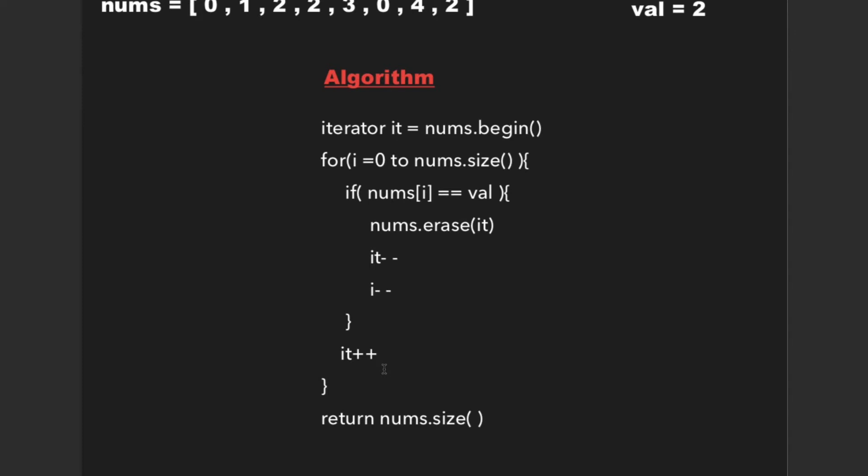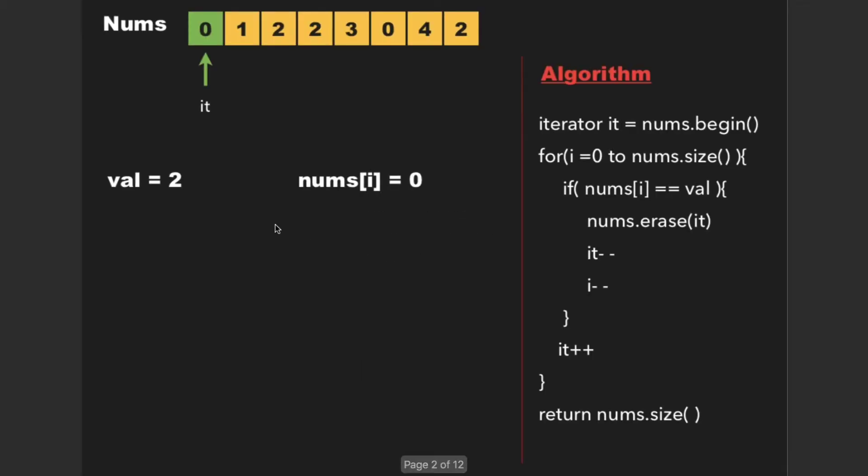And finally, we increment it to point to the next element of the array. And after finishing the loop, we return the size of nums vector. Initially, it points to the first element of nums, which is 0. So nums[i] is 0,